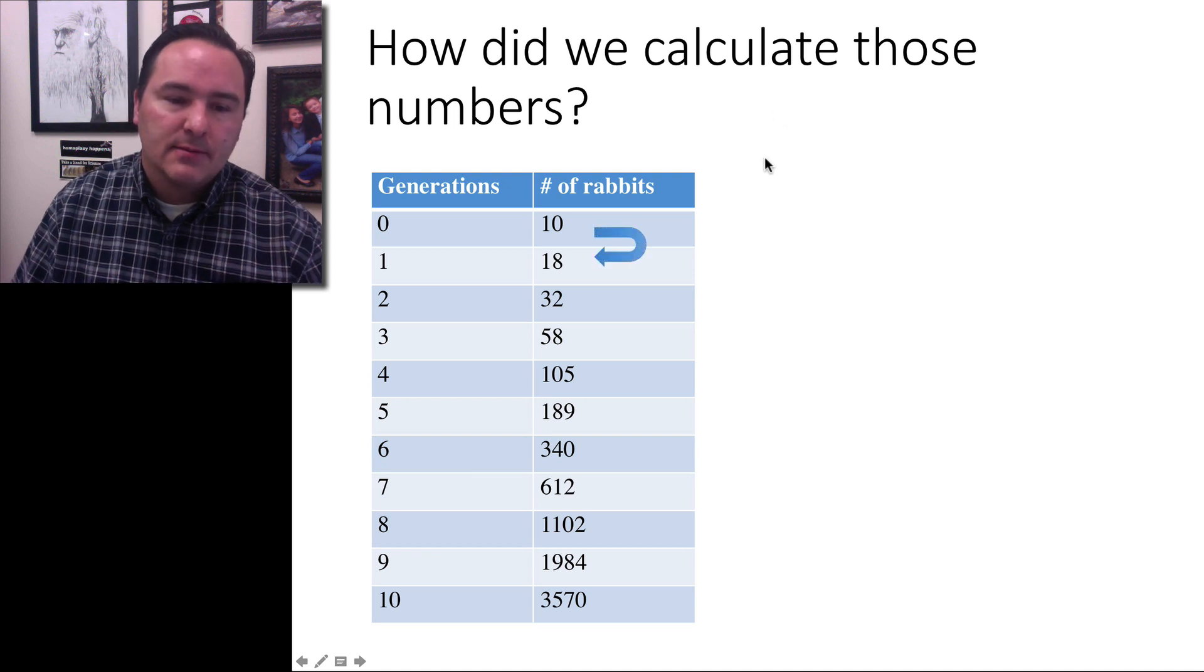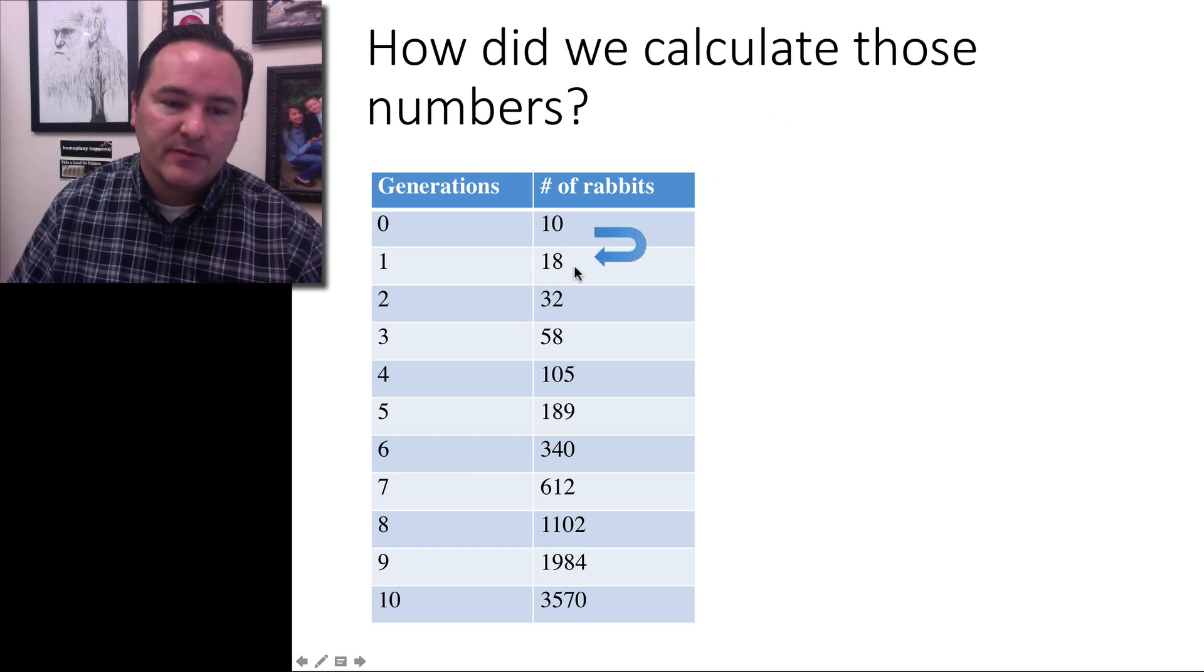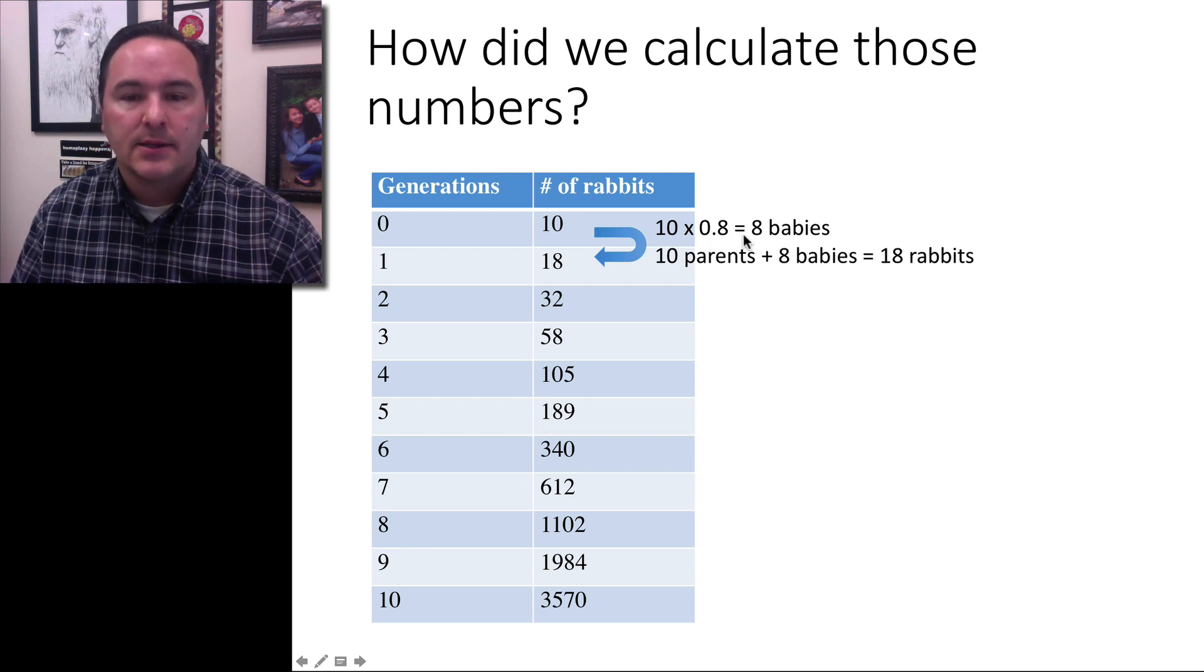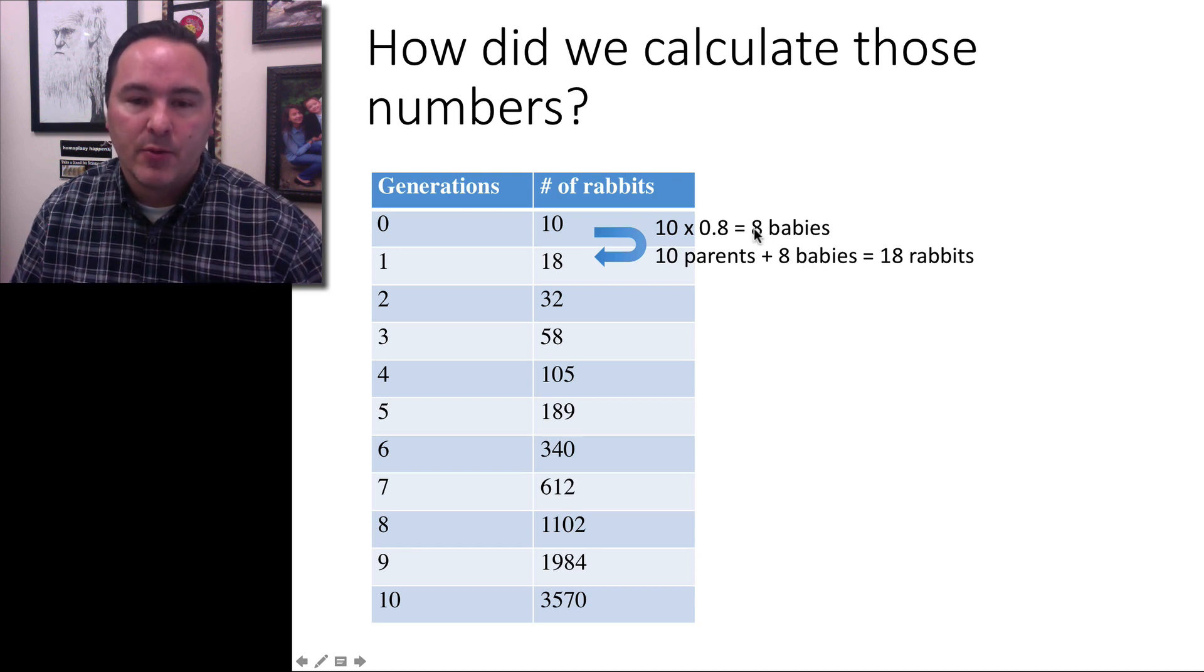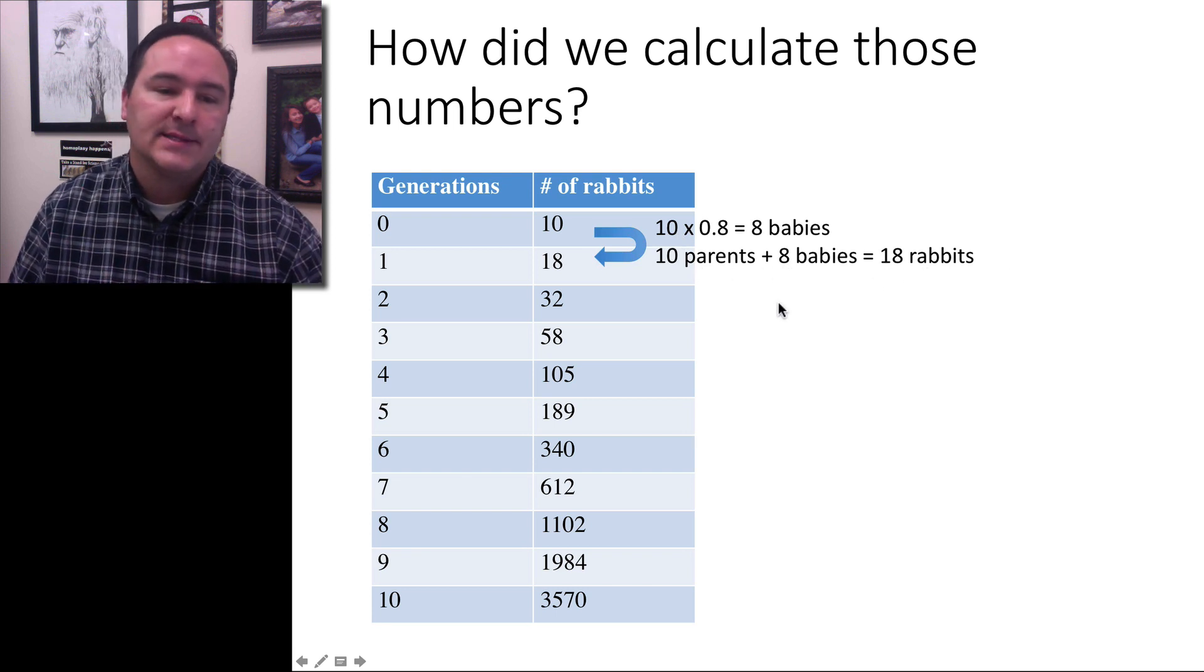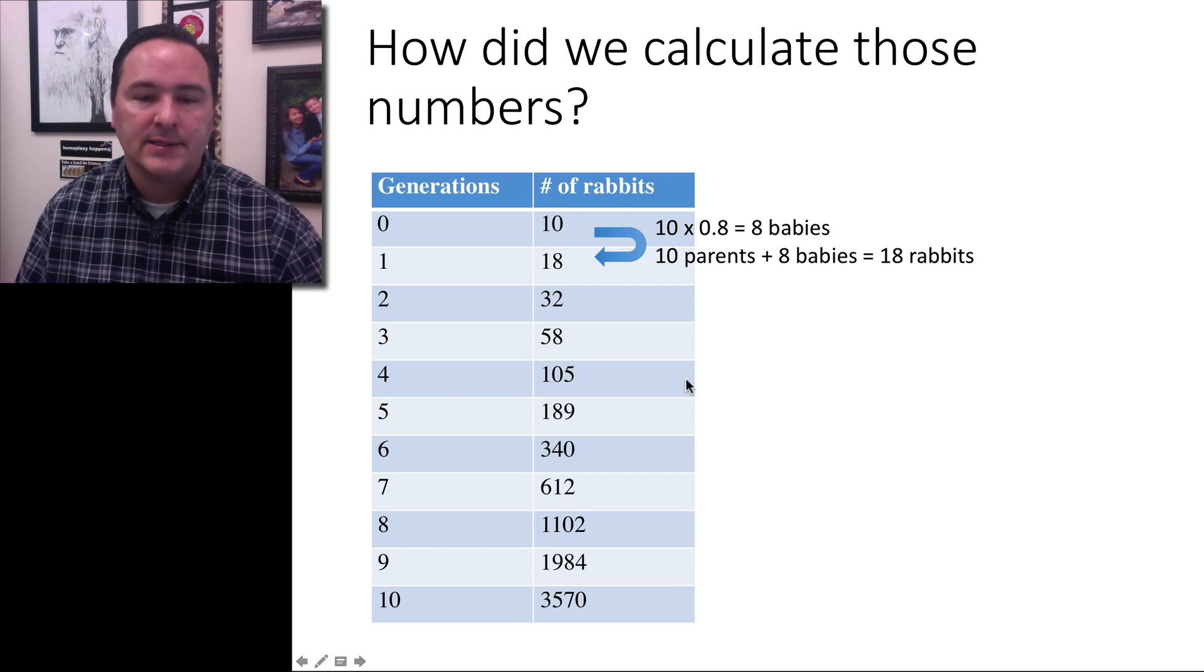How did we do that? How did we go from 10 to 18? 10 times the rate, which is 0.8, equals 8 babies. So then you just go 10 plus the number of babies calculated from the rate and the previous generation. So 10 plus 8 equals 18. And that's how we calculated those. All the way down, that's how that was done.